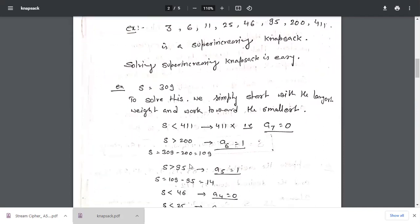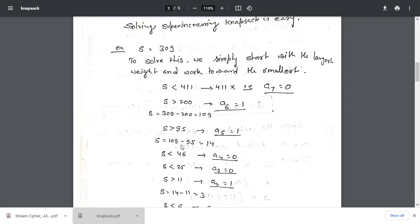Then we will calculate the remaining, it means how much S is left. So 309 minus 200 is 109. We will compare 95 with 109. 95 is less than 109, so a5 should be 1. Then we will again subtract the value and find the value of S. Then it is 14. 14 will compare with 46. 14 is less than 46, so we will not consider that weight. So a4 = 0.